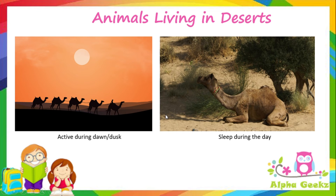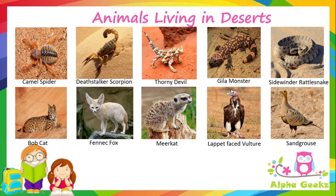Desert animals are usually active during dawn or dusk, as it is very hot during the day, and they sleep in cooler places during daytime. Many birds, snakes, lizards, spiders, and insects also live in the desert. Some examples include: camel spider, deathstalker scorpion, thorny devil, Gila monster, sidewinder rattlesnake, bobcat, fennec fox, meerkat, lappet-faced vulture, and sandgrouse.